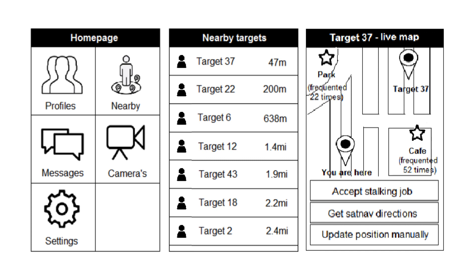The app can also detect automatically when the target is on the move, using the tracking beacon. It can also have a feature whereby, if the target leaves their phone at home, the target's position can be updated manually. All it takes is for one member of the surveillance team to spot the target and they can then update the target's position on the map so everyone in the team knows where they are.